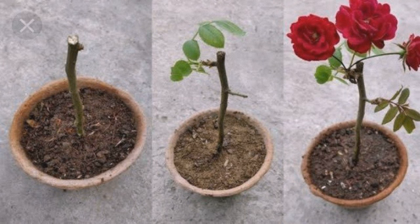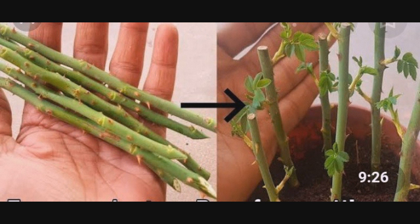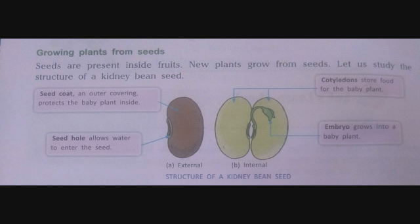You will see that seeds grow roots, and from the roots they grow up in other places. You can also grow plants from leaves. This is the structure of a kidney bean seed: there is a seed coat on the outside, an outer covering protecting the baby plant inside. There is also a seed hole — called the micropyle — which allows water to enter the seed.